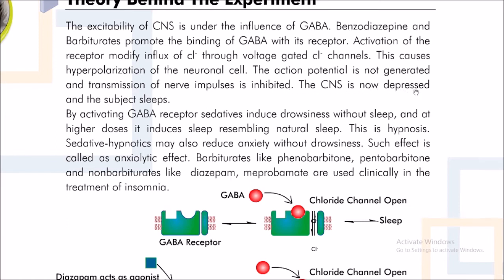The action potential is not generated and transmission of nerve impulses is inhibited. The CNS is now depressed and the subject sleeps. By activating GABA receptors, sedatives induce drowsiness without sleep, and at higher doses it induces sleep resembling natural sleep. This is hypnosis.